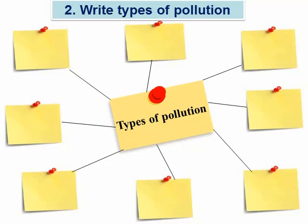Write the types of pollution you have learned in the vocabulary section of Unit 7. Take a moment to think and write all types of pollution you know. The first type of pollution — radioactive pollution.